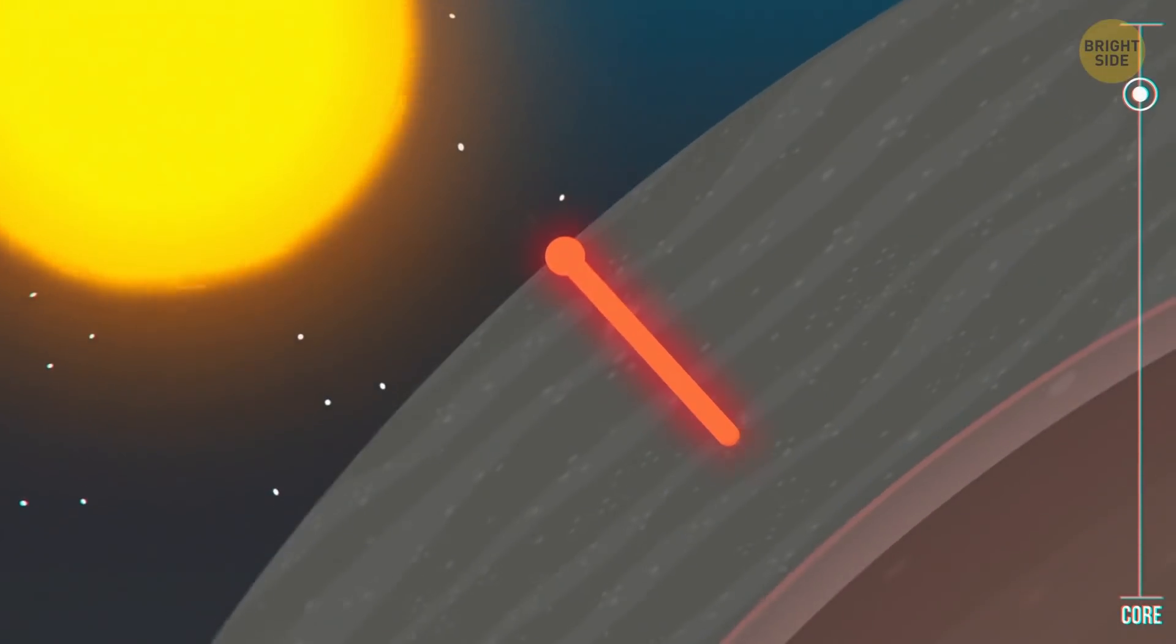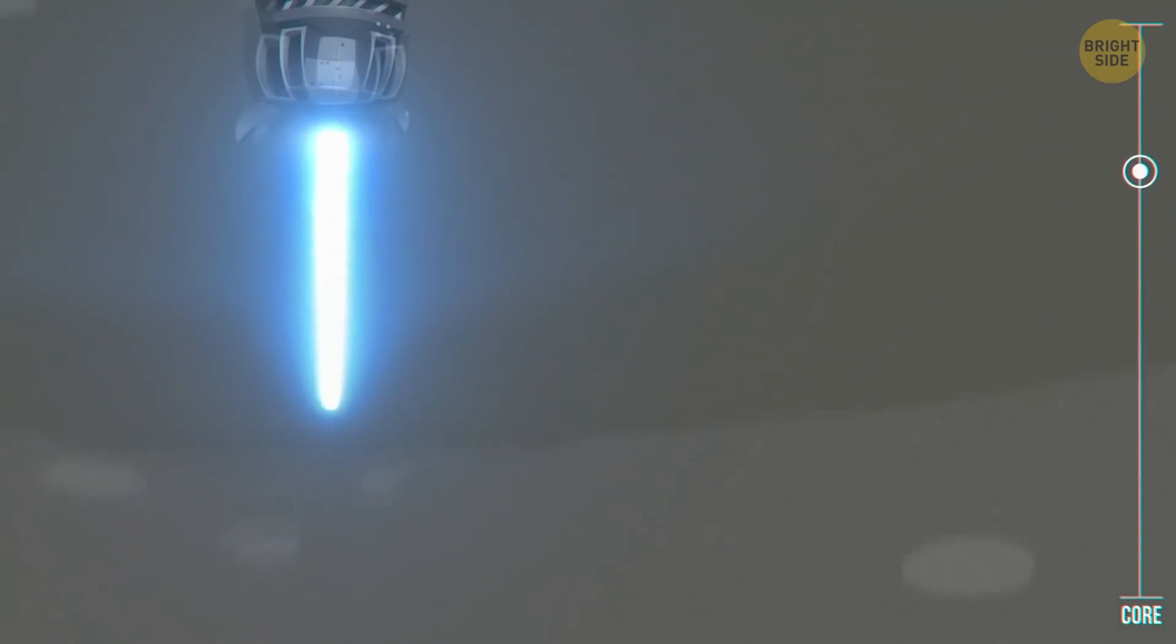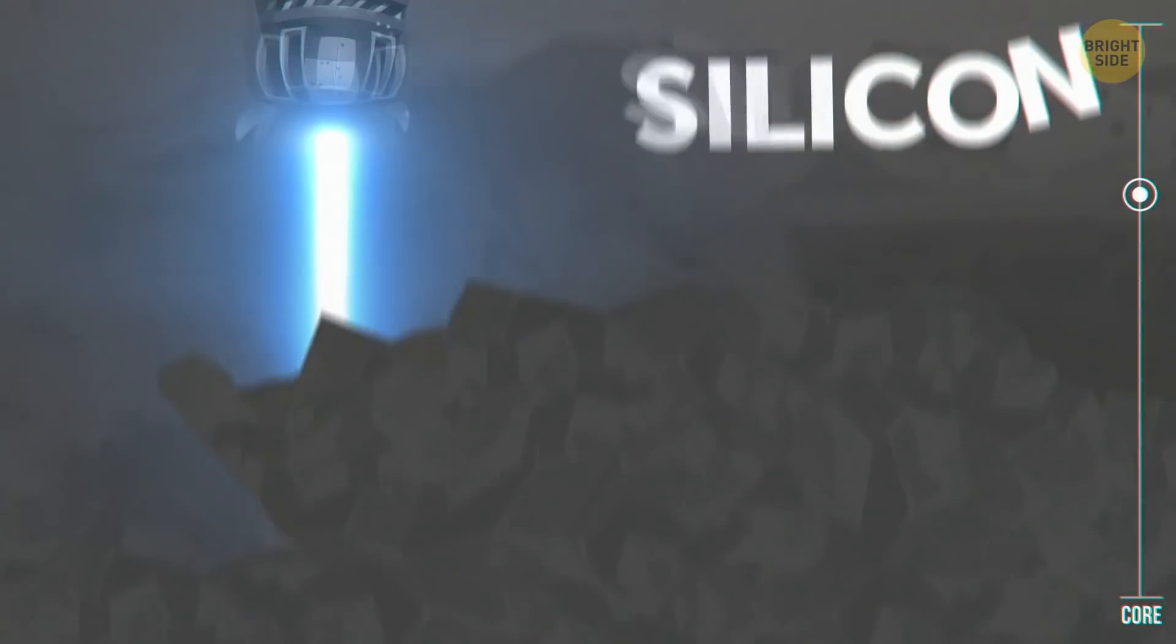We're on the sunny side, so the thickness of this layer is only 43 miles. But were we to land on the dark side, it would be more than twice as thick. The Moon is a rocky body, so its crust is largely made of silicon, iron, aluminum, calcium, oxygen, and magnesium, with much smaller amounts of other elements.